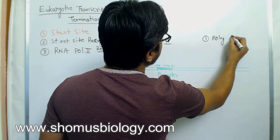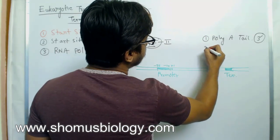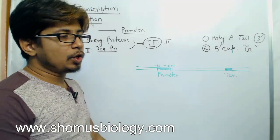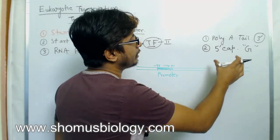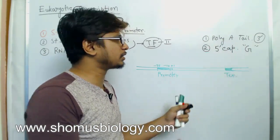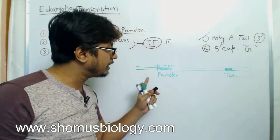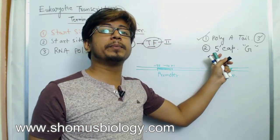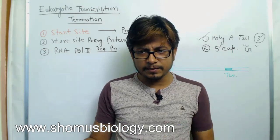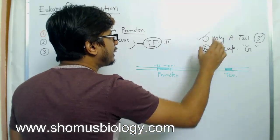That is the uniqueness of eukaryotic transcription — they need to add a poly-A tail, a tail of adenine, at the three prime end. After transcription is done they also need to add a five prime cap with the help of a guanine which is inversely linked. Without poly-adenylation and capping, the lifespan of the mRNA inside the cell is very short, so these modifications are very important.